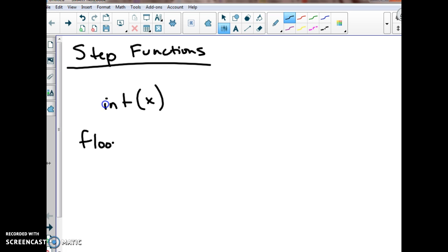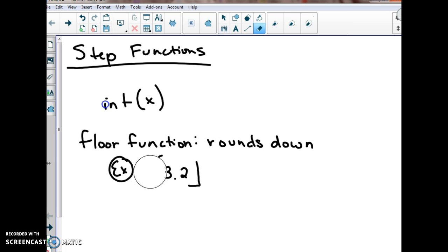There's two different types of step functions. We have a floor function which means that our function rounds down. So an example of this, if I were to have 3.2 and the notation to show you that it's a step function are these bars right here. And we know that this is a floor function because our hooks are on the floor.